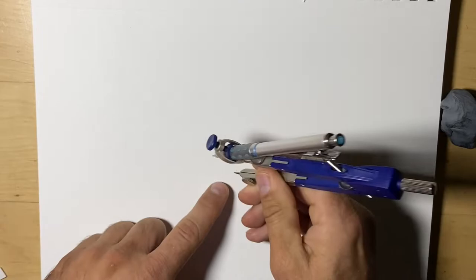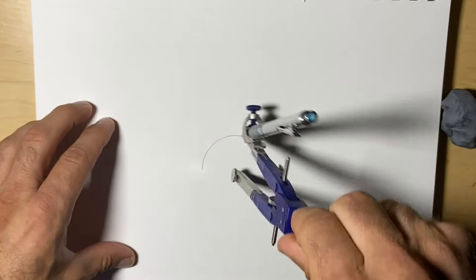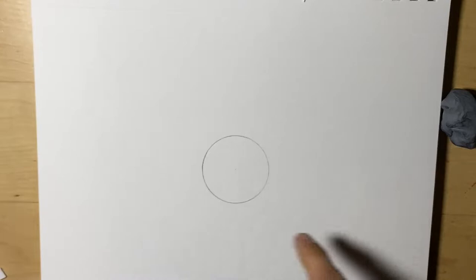So we start off with a circle in the center, and we're going to have to bisect it or cut it in half, and we'll use a ruler for that.